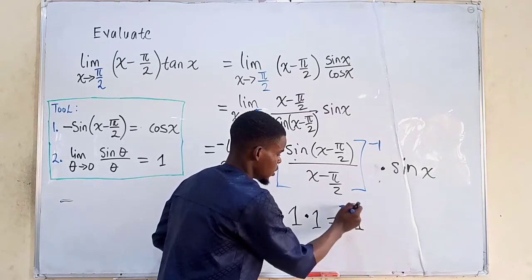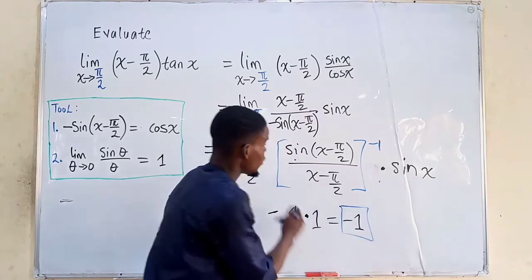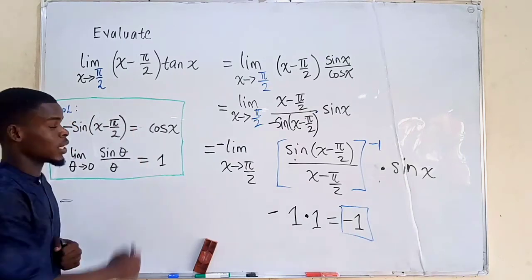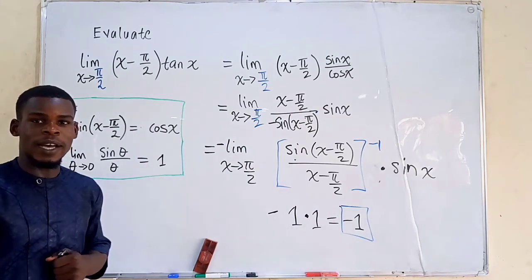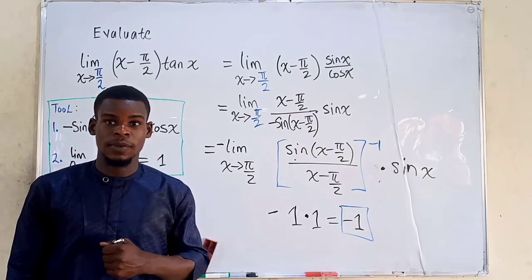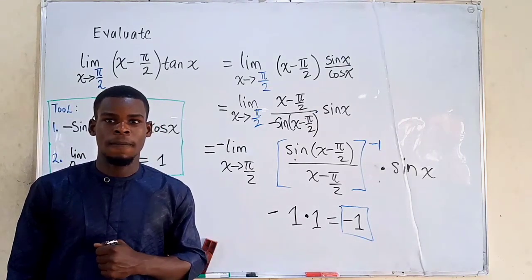So negative 1 is the limit of that function as x tends to π/2. Thanks for watching — please subscribe to my channel.